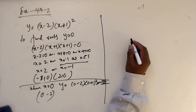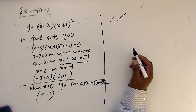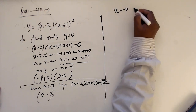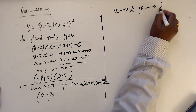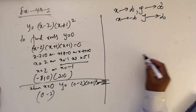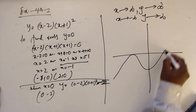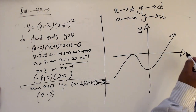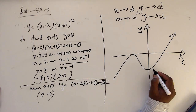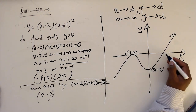Since the coefficient of x cubed is positive, I'm expecting this kind of graph. The key points are: the repeated root at (minus 1, 0), the y-intercept at (0, minus 2), and the simple root at (2, 0).